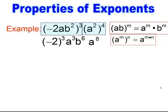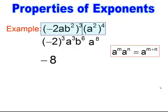Now we have the multiplication property. I simplify the negative 2 to the 3rd power, which gives me negative 8. Then with the multiplication property, when you have like bases being multiplied together, you add their exponents. So I end up getting a to the 11th, and then I bring down the last piece, b to the 6th. So this is simplified — be careful in the order in which you do your properties.